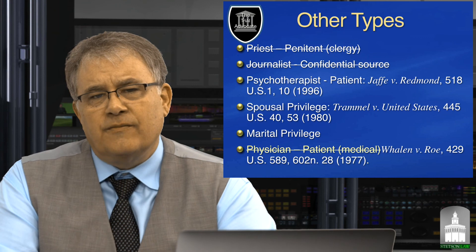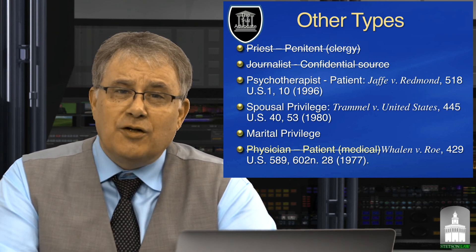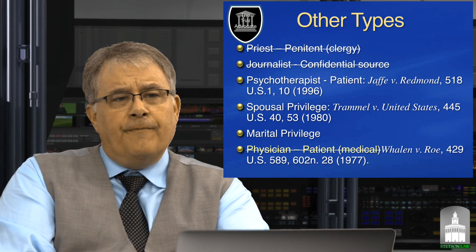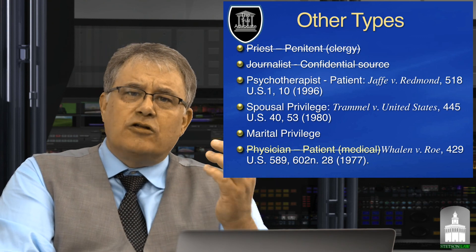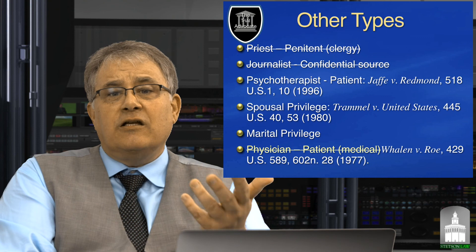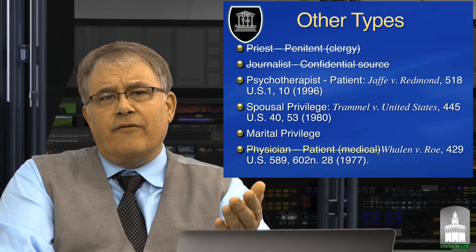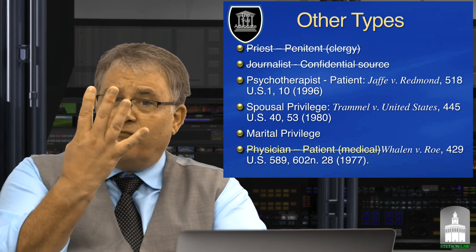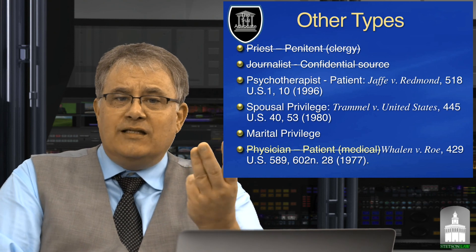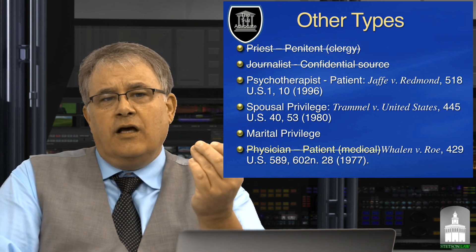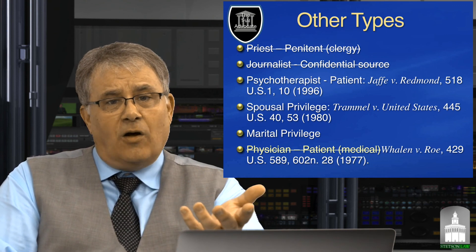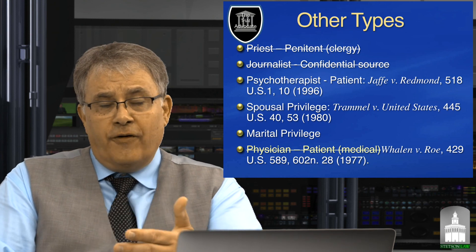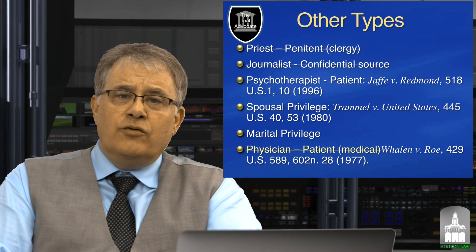Then there's the spousal privilege, which comes from Trammell v. United States. I'm going to talk about the spousal privilege and the marital privilege at length because it is commonly tested on most multi-state bar examinations, lends itself to comparison between two standards, and is not just a black-letter law test. There is an attorney-client privilege, a psychotherapist-patient privilege, a spousal privilege, and a marital privilege — four recognized federally. But three do not exist at the federal level: priest-penitent, journalist, and physician-patient.